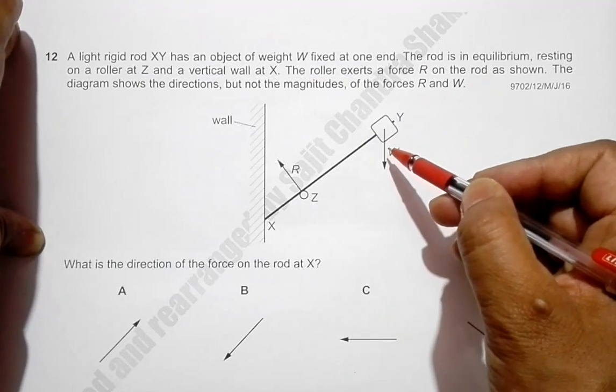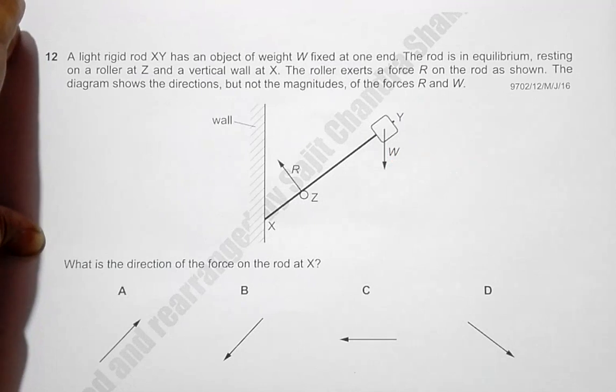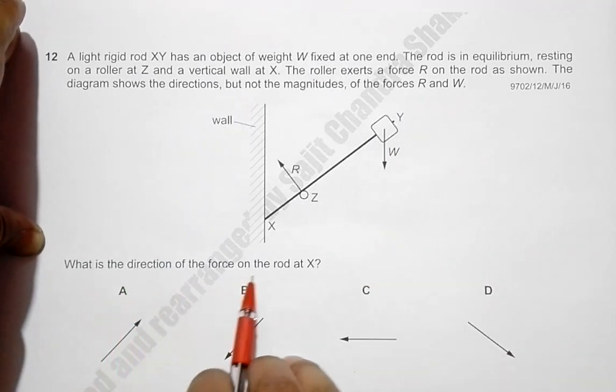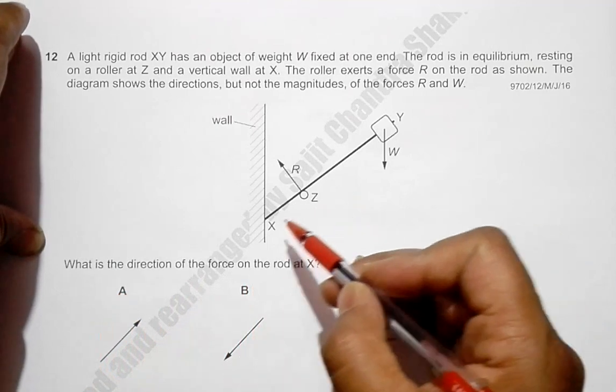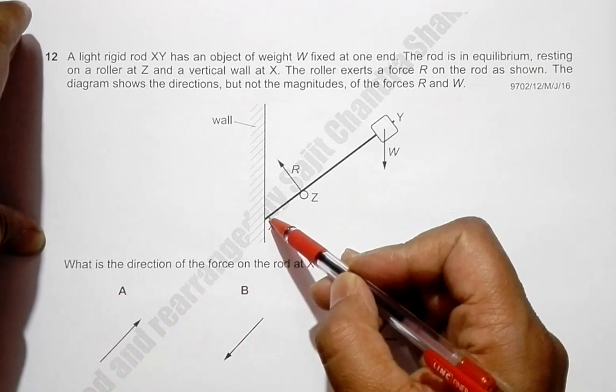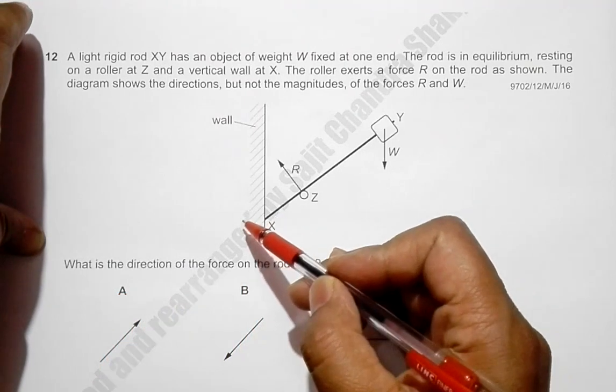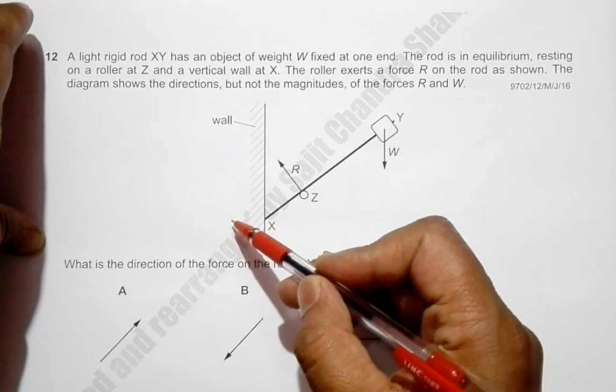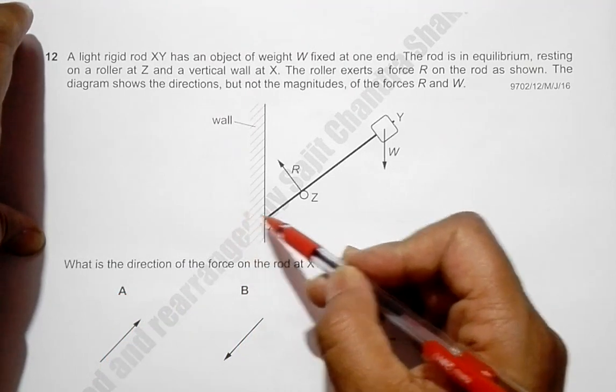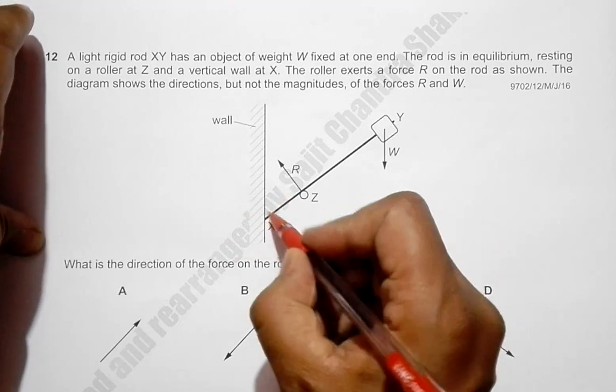So we have to find what is the direction of the force on the rod at X. So we have to find the direction of the force on the rod, that means the resultant force exerted by the wall on this rod at X.